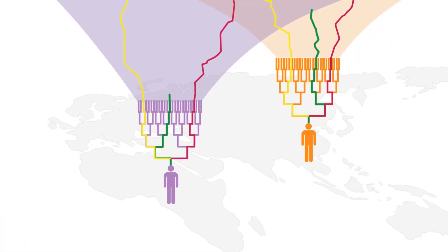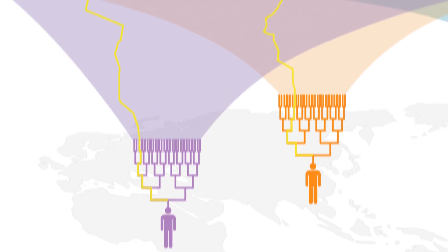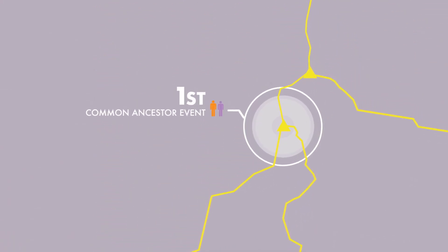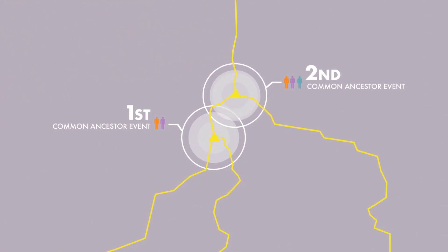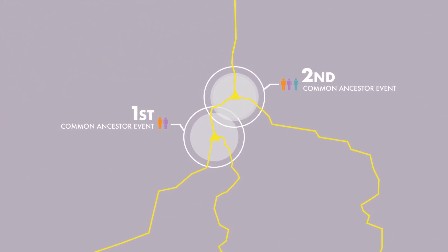For the yellow section of the genome, the purple and orange individuals find their common ancestor first. Then, the common ancestor of those two meets with the common ancestor of the blue individual further back in time.